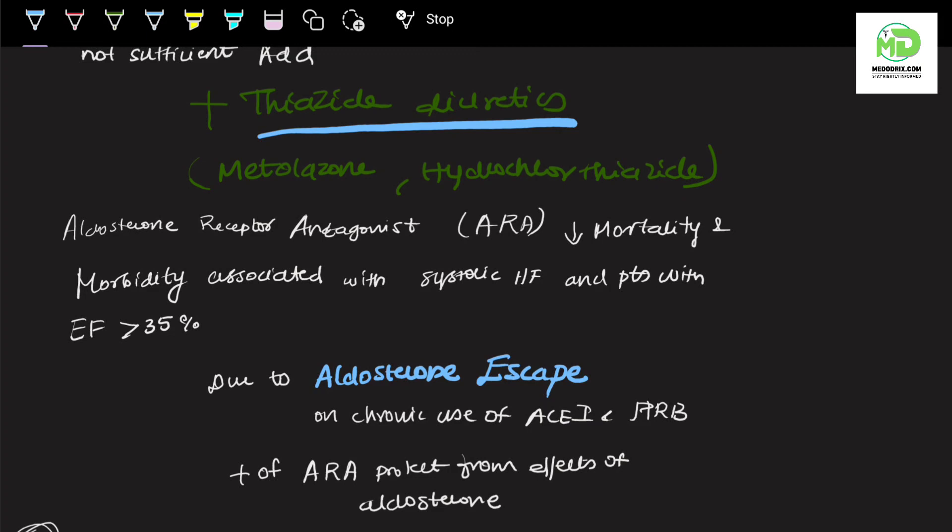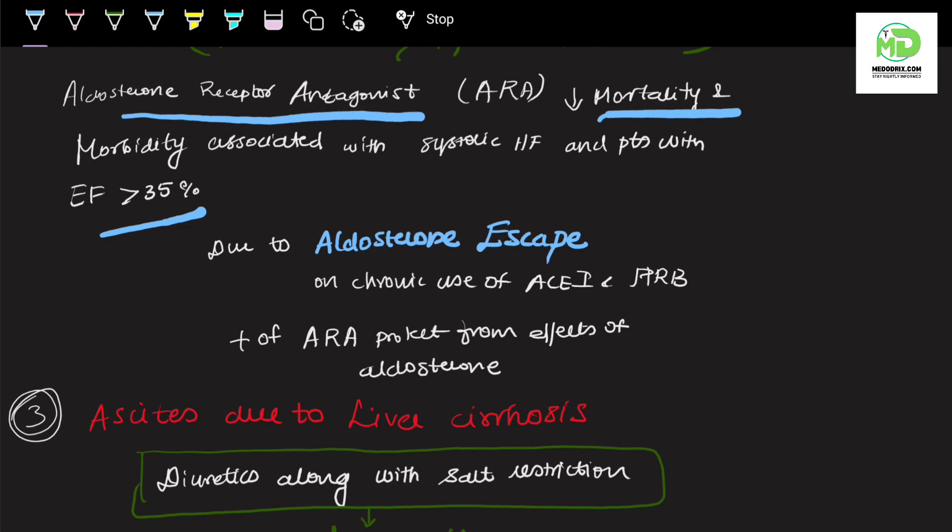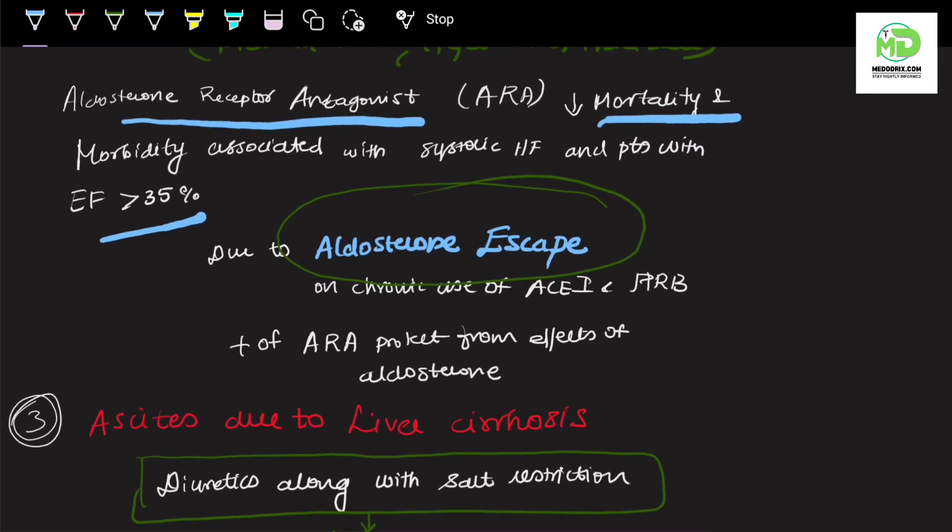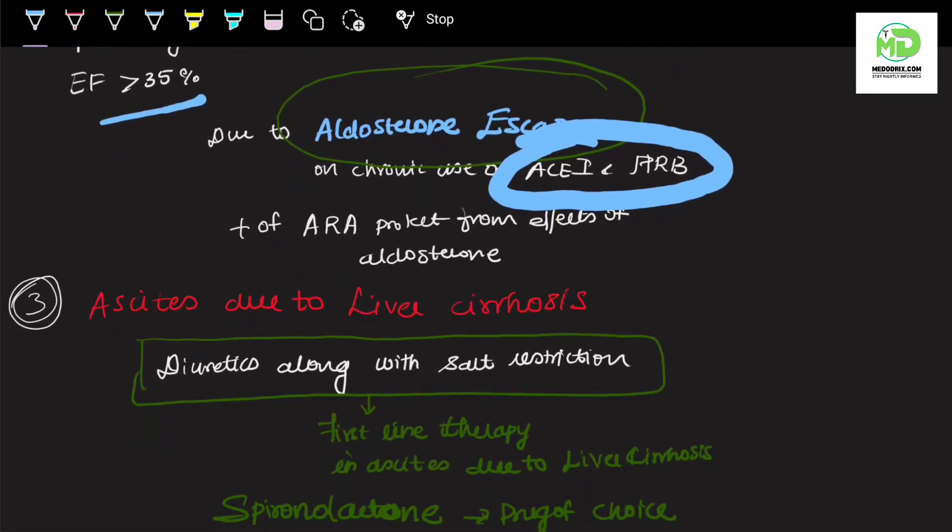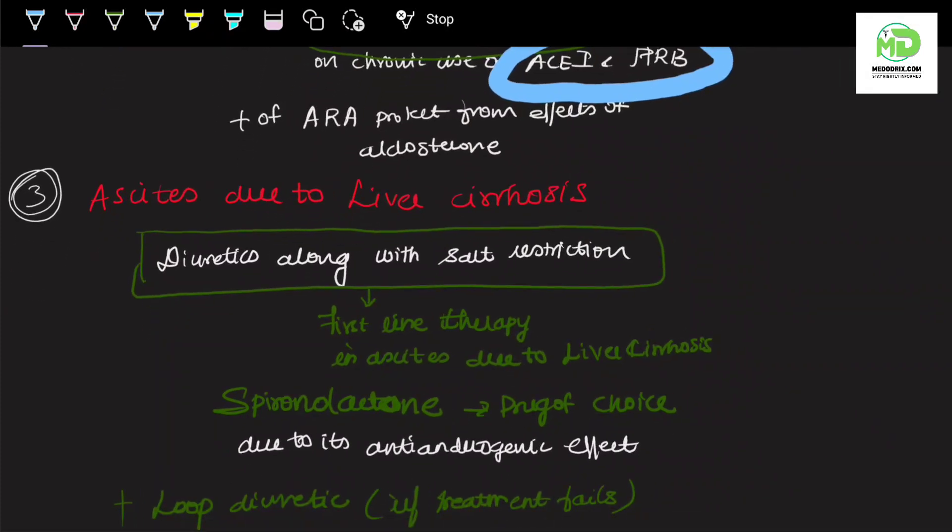In some cases, aldosterone receptor antagonist is added to reduce mortality and morbidity associated with systolic heart failure in patients with ejection fraction less than 35%. This is because of a term called aldosterone escape, where aldosterone secretion will not be reduced due to administration of ACE inhibitors and angiotensin receptor blockers. In such cases, addition of aldosterone receptor antagonist will help.